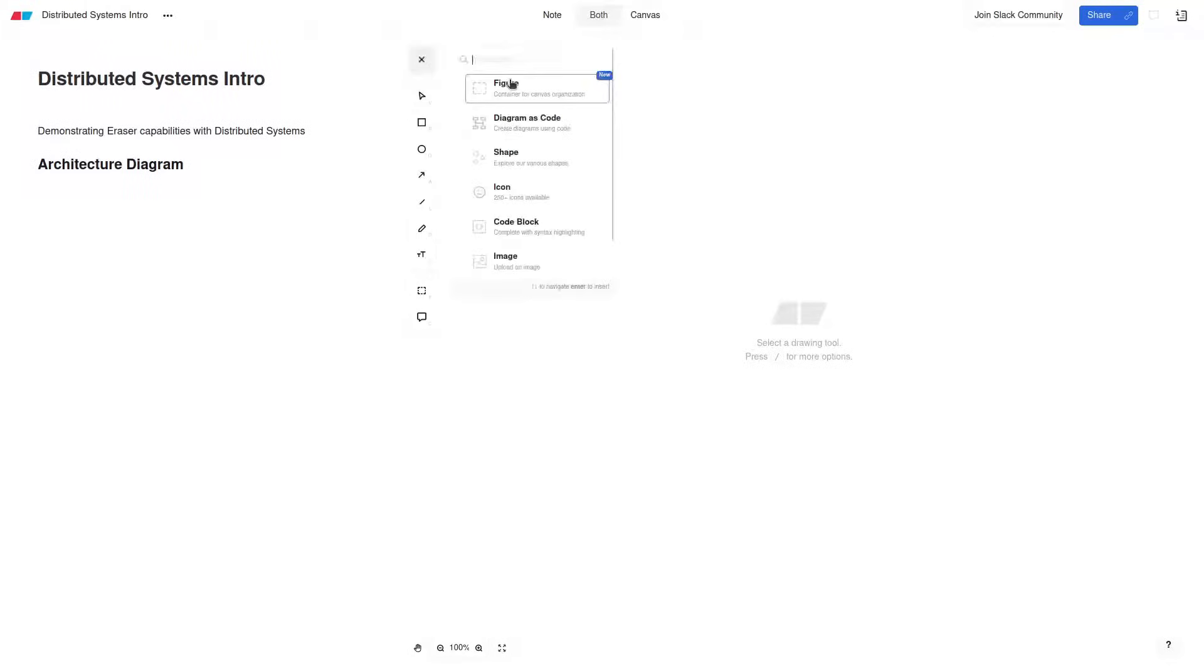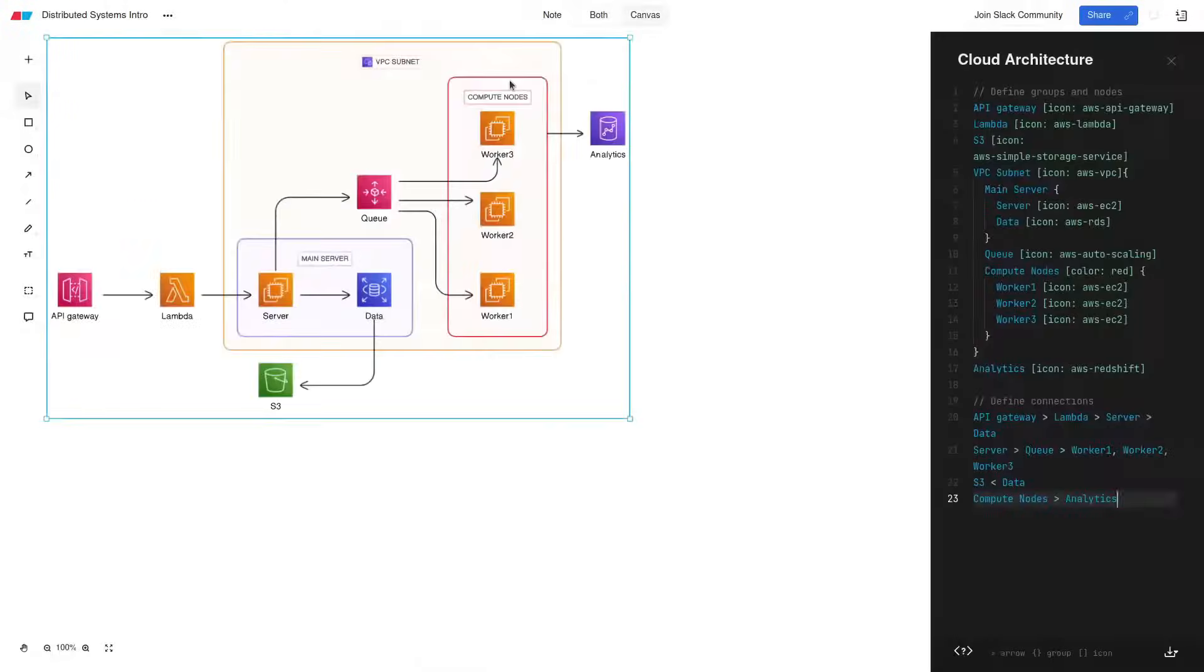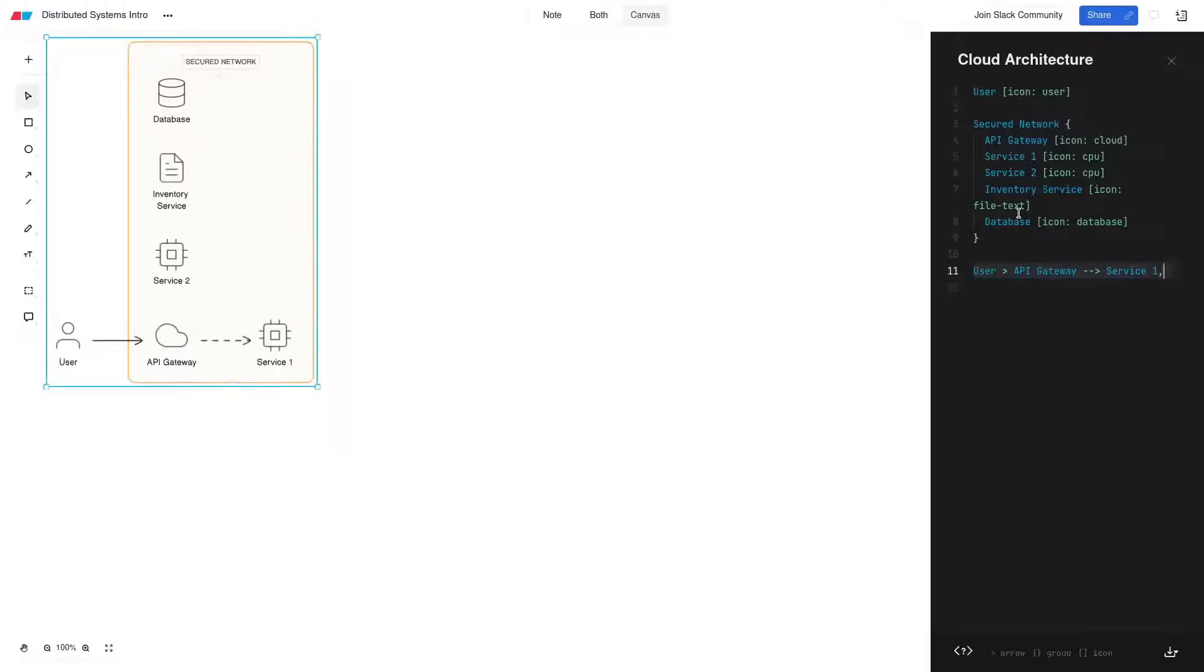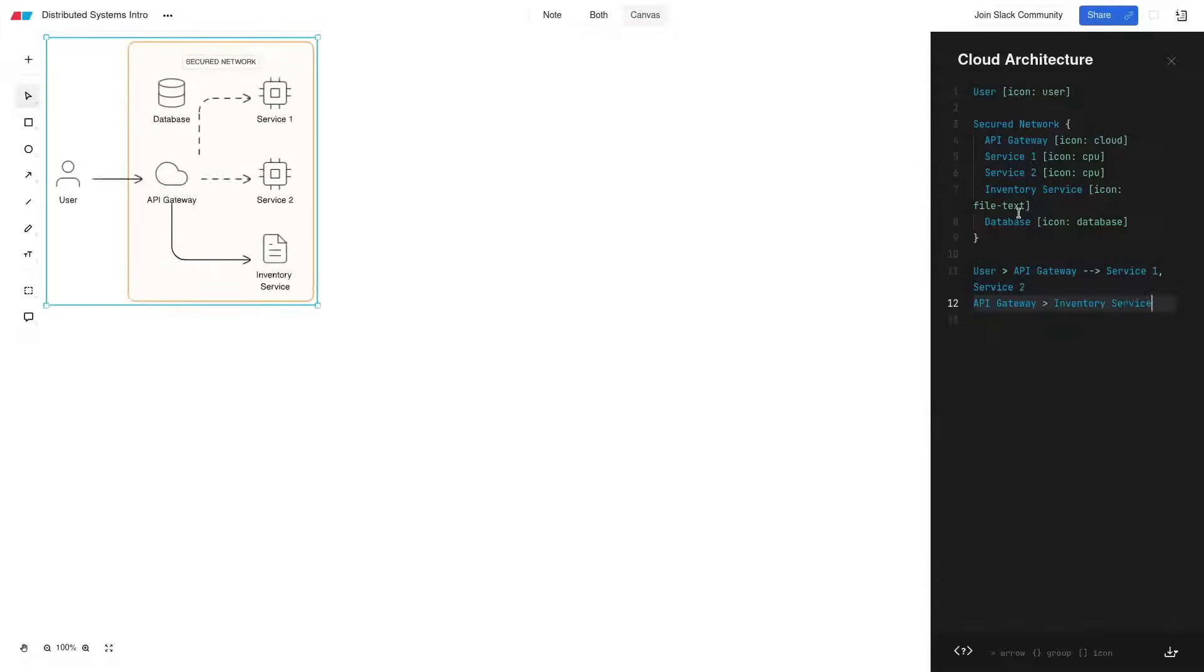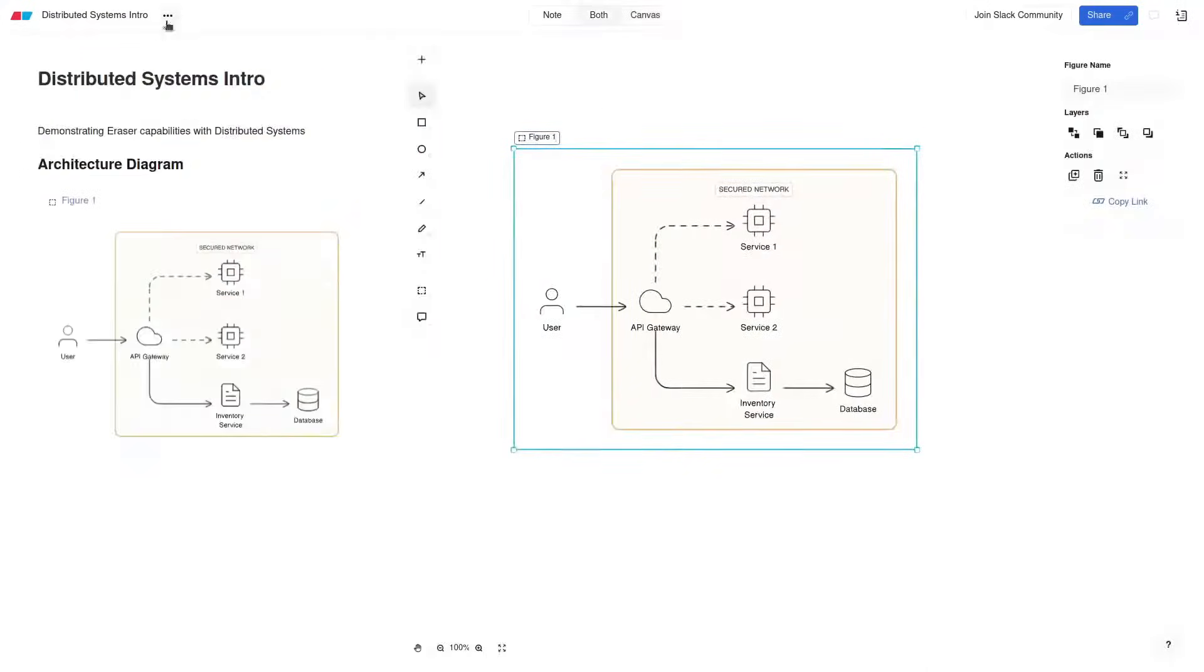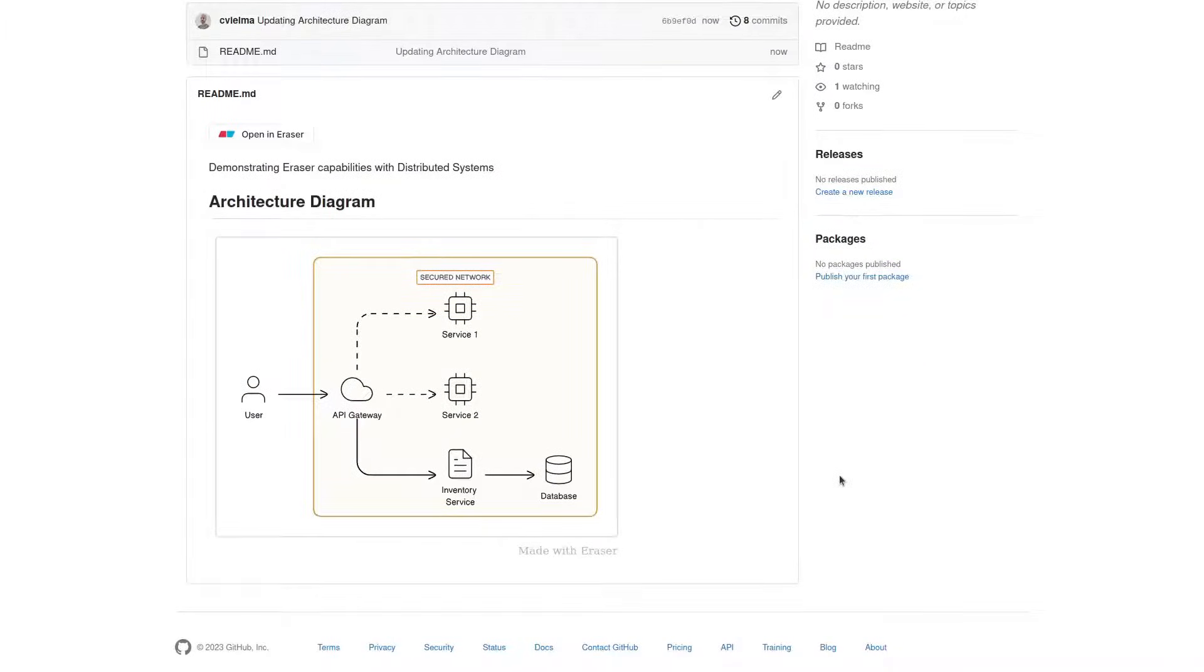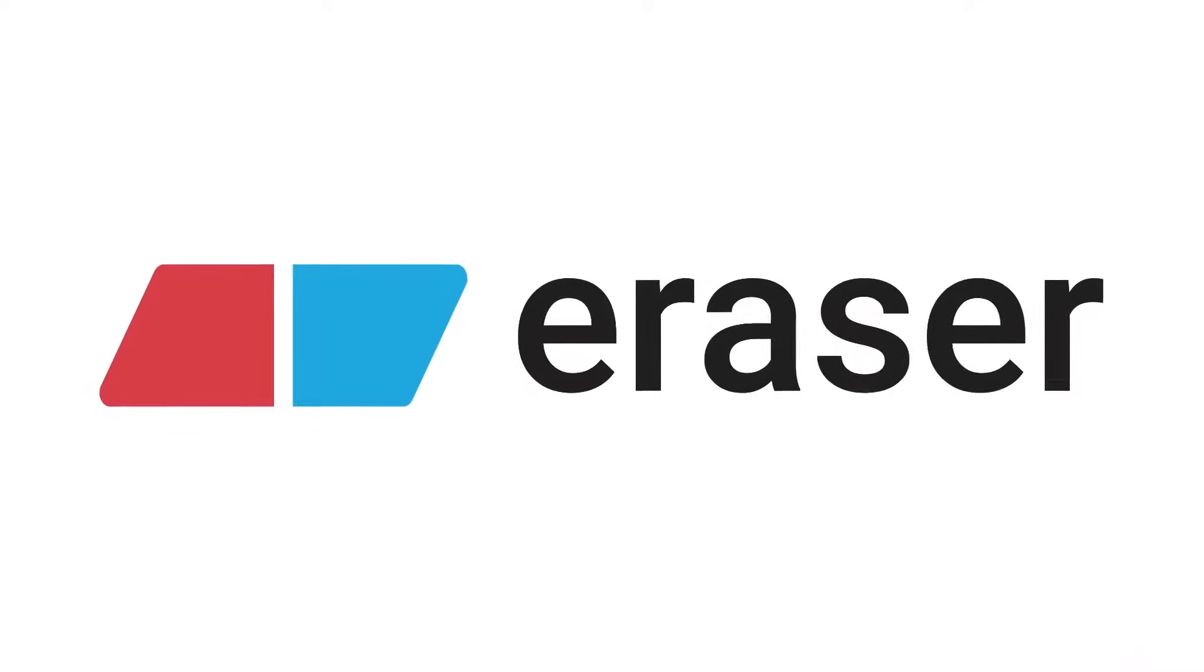I personally like how easy Eraser is to use. Some of the top features I like the most are the keyboard shortcuts and the diagrams as code. Look how easy it is to create the diagram we just did earlier in today's video. I don't even need to use the mouse. I can just use the insert menu, select diagram as code, and start creating my diagram. And I can easily update it directly in the code and export it to GitHub. You too can start using Eraser for free today. Check the link in the description below.